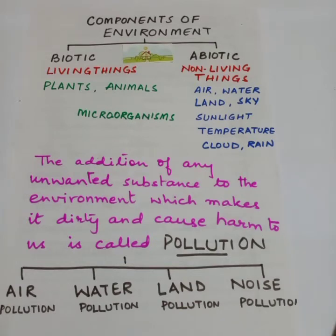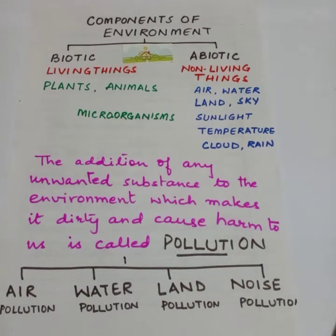Before letting dirty water into seas, rivers, and lakes, it must be treated with chemicals to make it less harmful. Factory chemical water that flows into rivers and lakes should be chemically treated beforehand. To check air pollution, we must get our vehicles fitted with CNG and LPG kits.